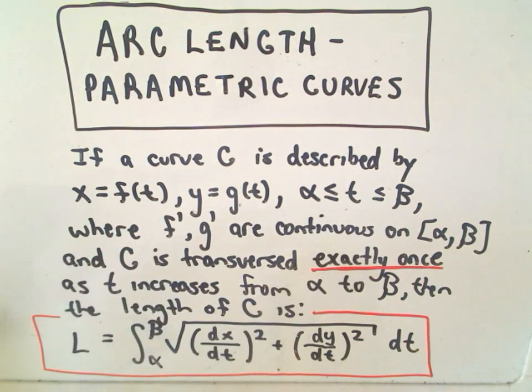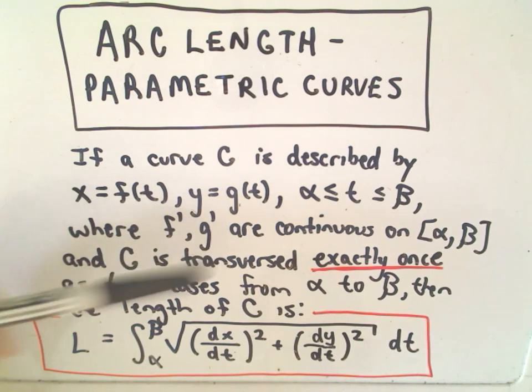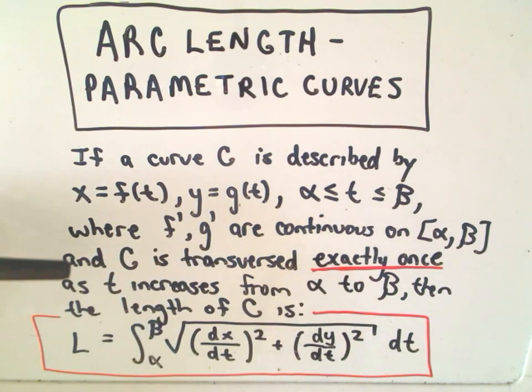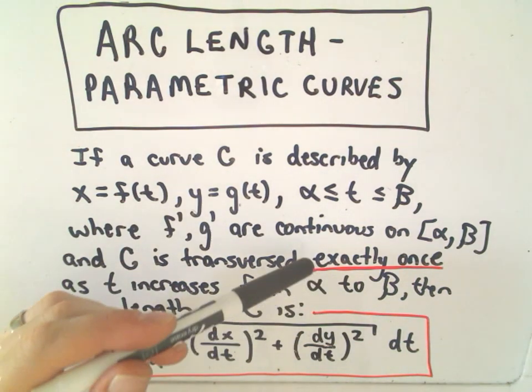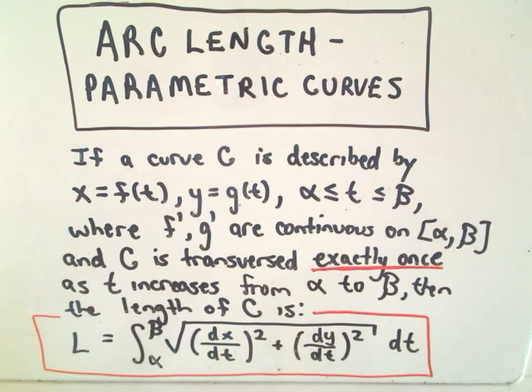So the result says if you have a curve C that's described by some parametric equations, x is a function of t, y is also a function of t, t is between alpha and beta.